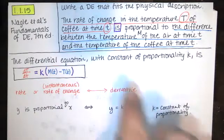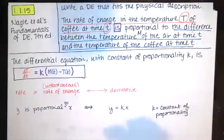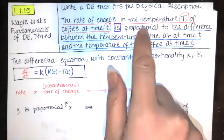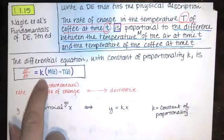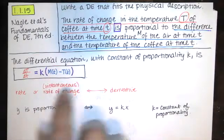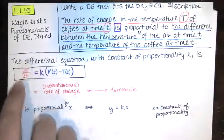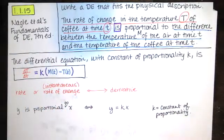So that's all we're doing here, we're just taking this sentence apart. When you see is, think equals. When you see is proportional to, that means equals k times something. And what this is telling us is that this variable over here, which was a rate of change, so it's the derivative of T with respect to t,